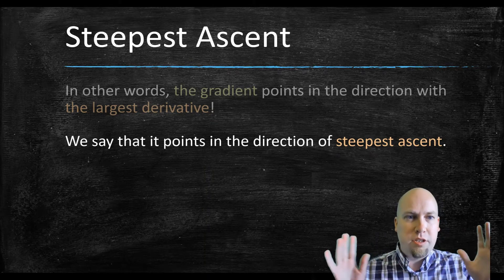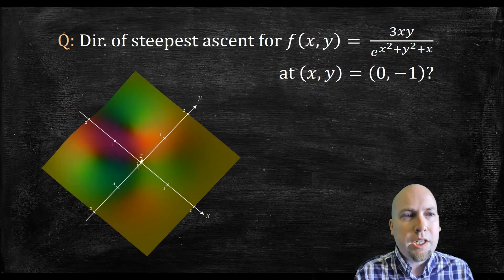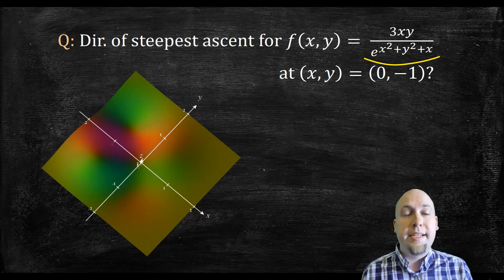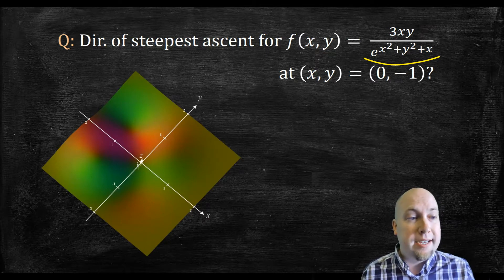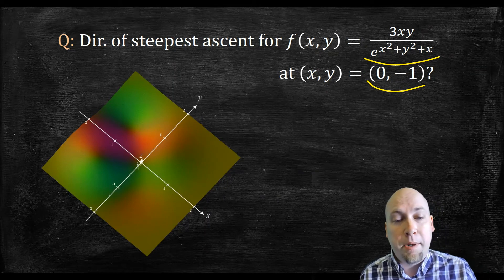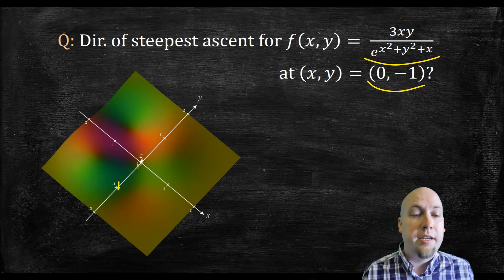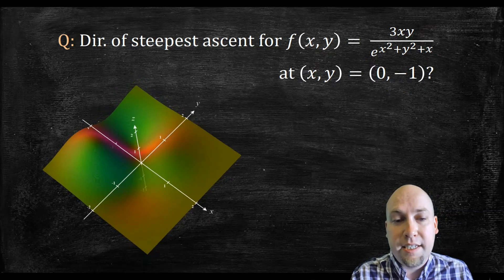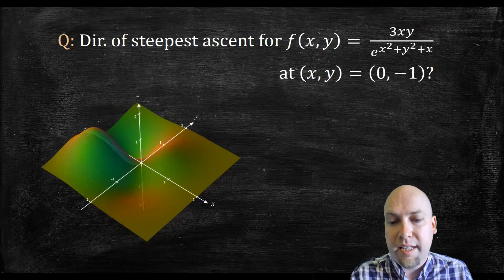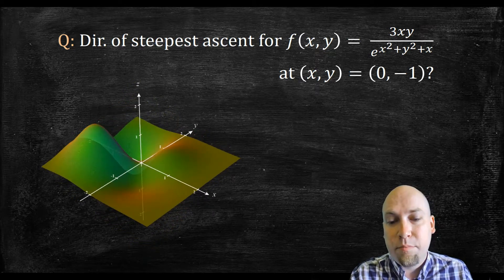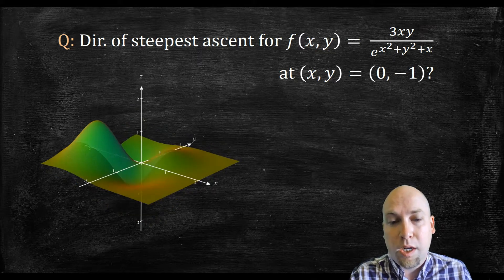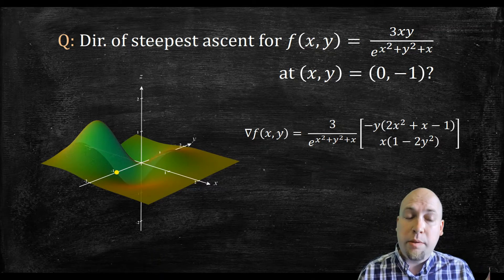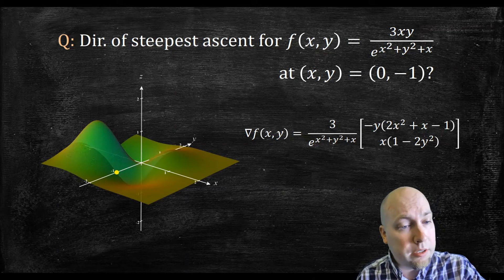Let's go through an example to make sure we understand what's going on. We'll find the direction of steepest ascent for the function 3xy divided by e to the power x squared plus y squared, plus x, at the point (0, -1). On the graph, that's this point down here at (0, -1). I'm going to rotate that graph around a little bit so we can get our bearings and get an idea of what that function looks like — it has hills and valleys all over the place. To find this direction of steepest ascent, the first thing we've got to do is find the gradient, as shown here.